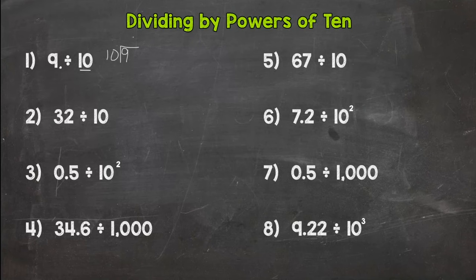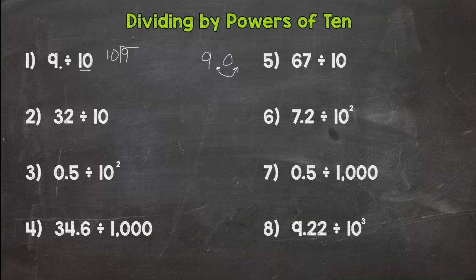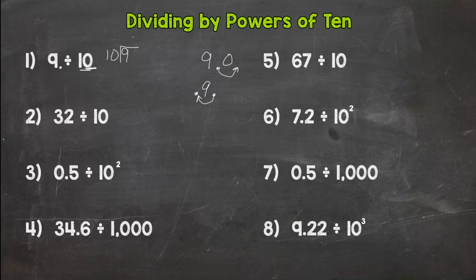So we have 9 divided by 10, so I'll come over here and move the decimal. We have to think which way do we move it. We are dividing, so we want to decrease the value. So if we moved it to the right, we would get 90 — did we decrease the value of the 9? No. If we were multiplying by 10, we would move it to the right. But in division, we move the decimal to the left. One zero in 10, so we move the decimal one time, and now it comes before the 9. So our answer is 9 tenths.